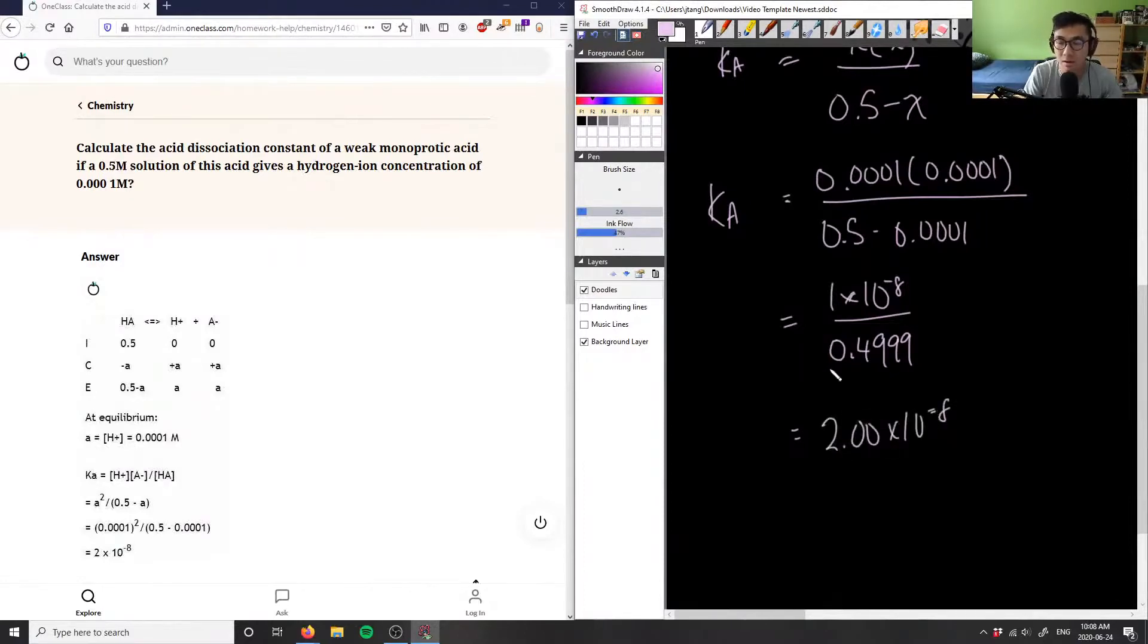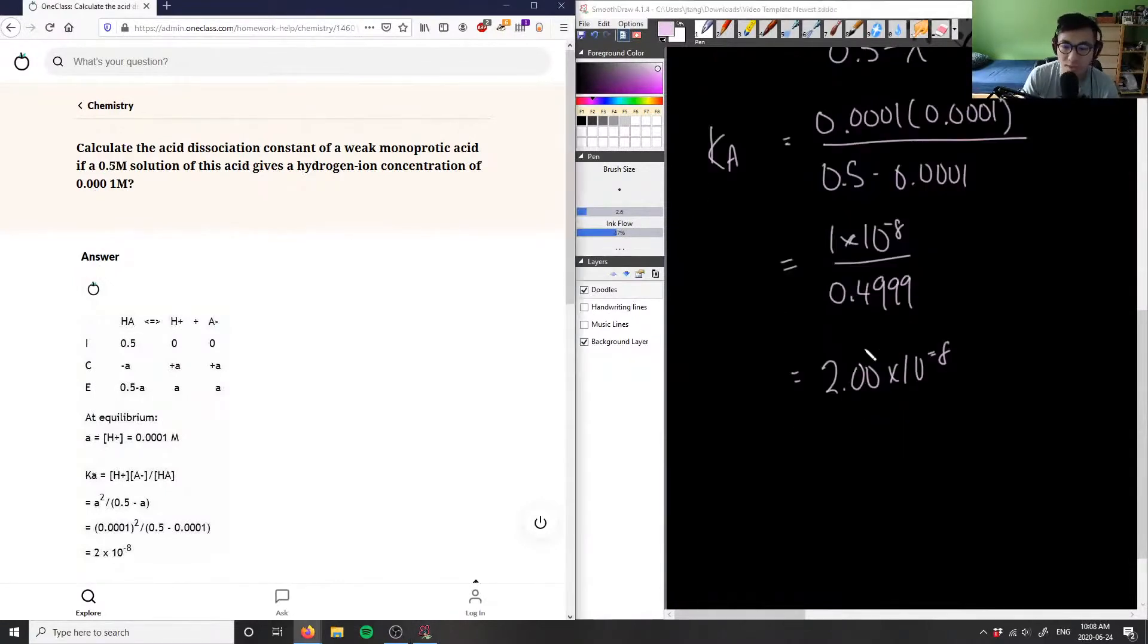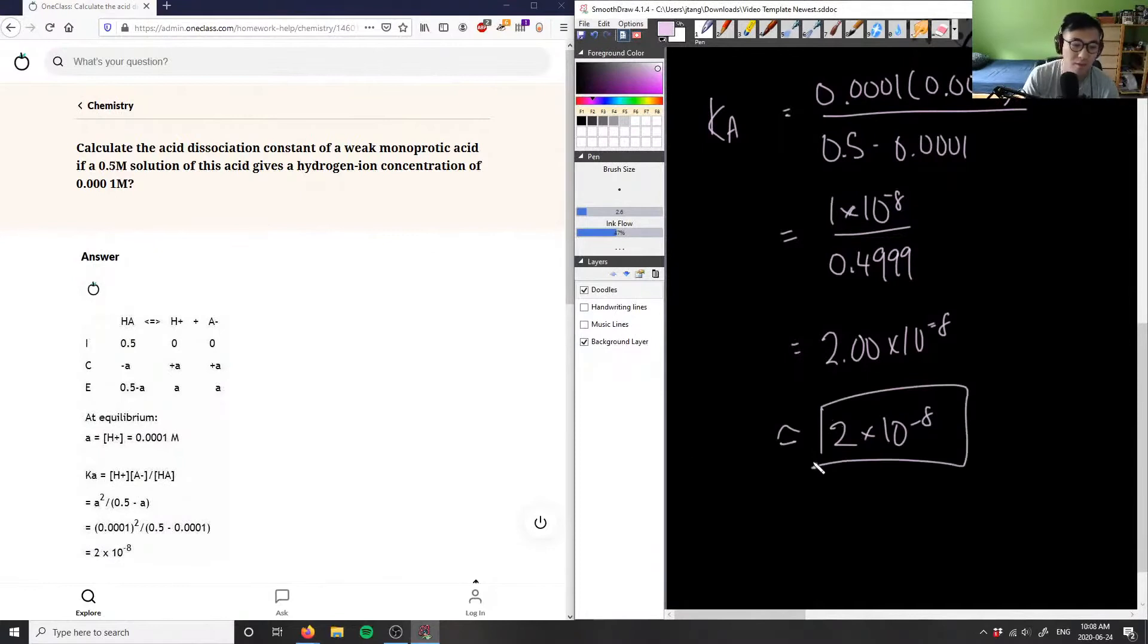Now this here is our Ka expression for our answer, and in terms of significant digits, if we're looking at this, I have one significant digit here and four here, so I would follow the first guy here, which means our answer specifically should be 2 times 10 to the negative 8. So this here is our answer, and as you can see this answer matches the given solution, so the solution here is correct.